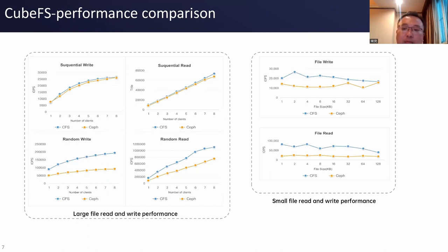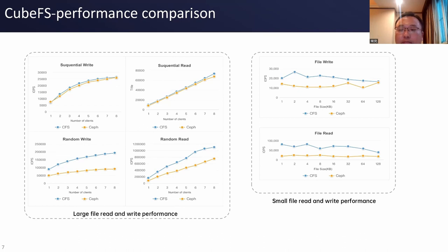This page shows the KubeFS performance comparison. Sequential read and write of large files is comparable to CephFS, and the random read and write performance is better. This is because each metadata server in CephFS only caches a portion of the file metadata in memory. In the case of random reads, the cache miss rate can increase dramatically as the number of processes increases, causing frequent disk I/O. In contrast, each metadata node of KubeFS caches all the file metadata in memory to avoid expensive disk I/O.